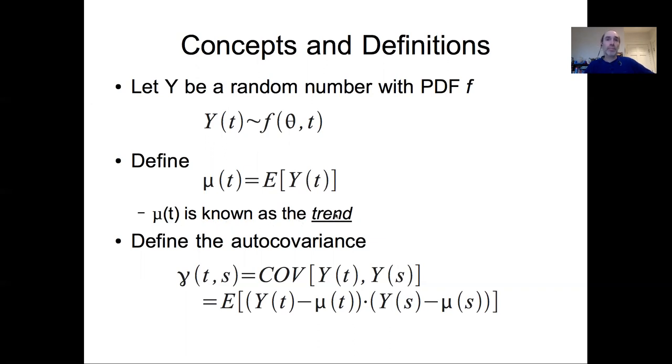And if we have that concept of the trend, we can also define the autocovariance, which is very much like a covariance, but a covariance between two points in time. We have the covariance between time point t and time point s, which is the expected value of Y at t minus mu of t times Y at s minus mu at s. So the covariance between the residuals of the random variable and its expected value at each time.